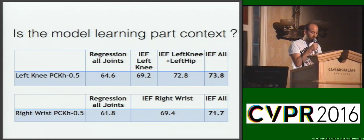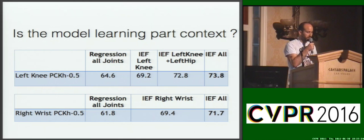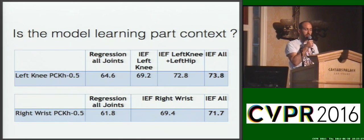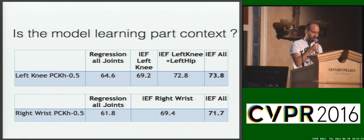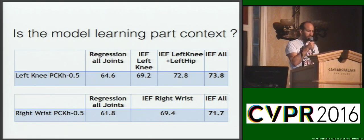In the current estimate for the left knee, performance already lies... ...back-offs or nearby joints such as the left hip perform... ...there's another increase to 73.8.